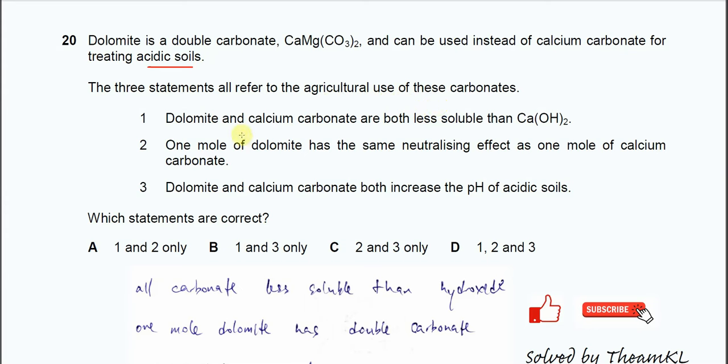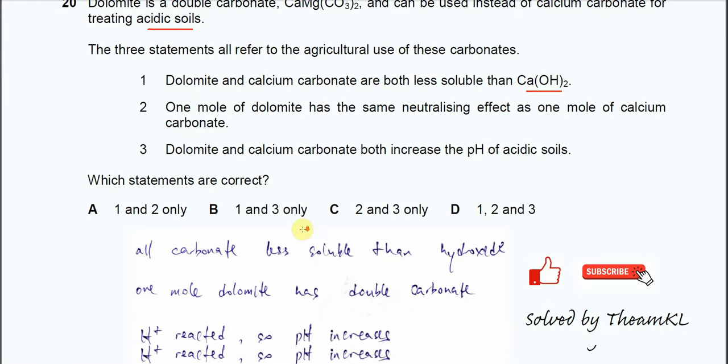The first statement: dolomite and calcium carbonate are both less soluble than calcium hydroxide. This is true. Please remember, all carbonate—in this case group 2 carbonate—group 2 carbonate is less soluble than the hydroxide. Group 2 carbonate is highly insoluble. The solubility is very, very low. So statement 1 is correct.